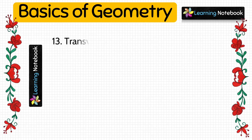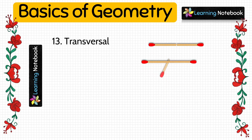The next term used in geometry is transversal. A line which intersects two or more lines at different points is called a transversal. Here we are showing parallel lines L and M, and we have pasted three matchsticks to form transversal T. This transversal T is intersecting the two parallel lines at two different points.